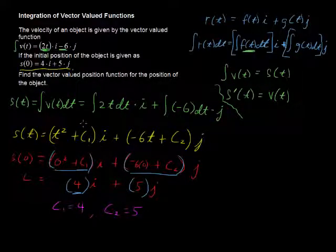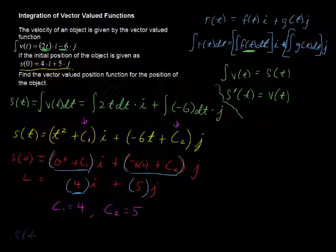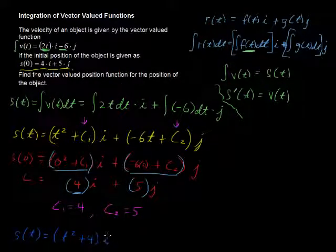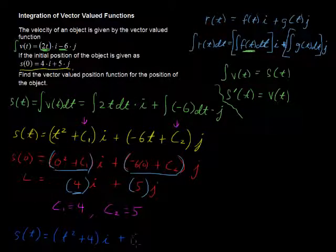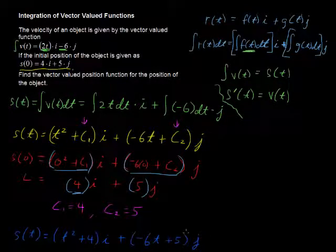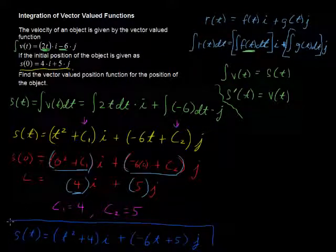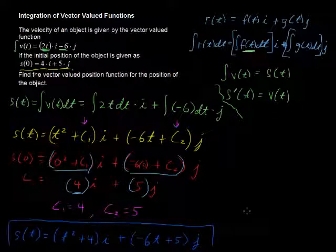Now, plug all that in, here and here, and we'll be left with our particular solution. So, that is s of t equals t squared plus 4 times i, plus negative 6t plus 5 times j, or in the j direction, in the vertical direction. So, there is the position of the function at any given time t.